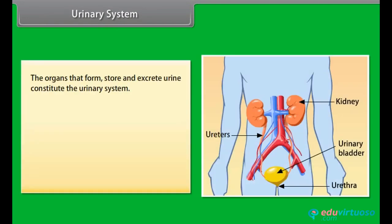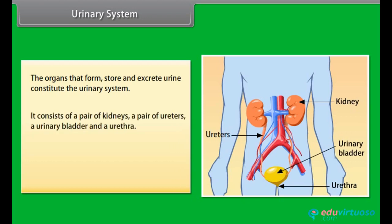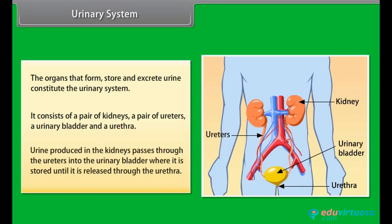The organs that form, store, and excrete urine constitute the urinary system. It consists of a pair of kidneys, a pair of ureters, a urinary bladder, and a urethra. Urine produced in the kidneys passes through the ureters into the urinary bladder, where it is stored until it is released through the urethra.